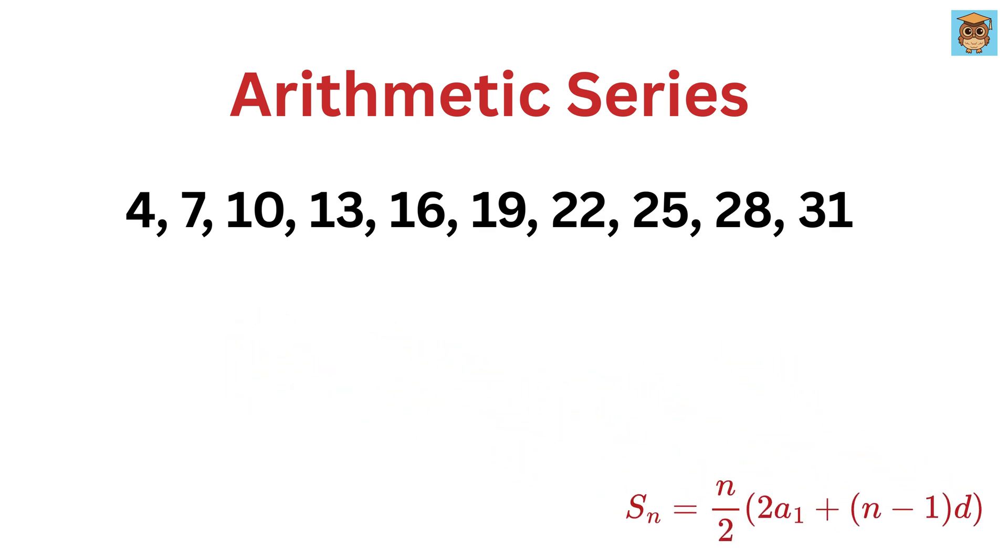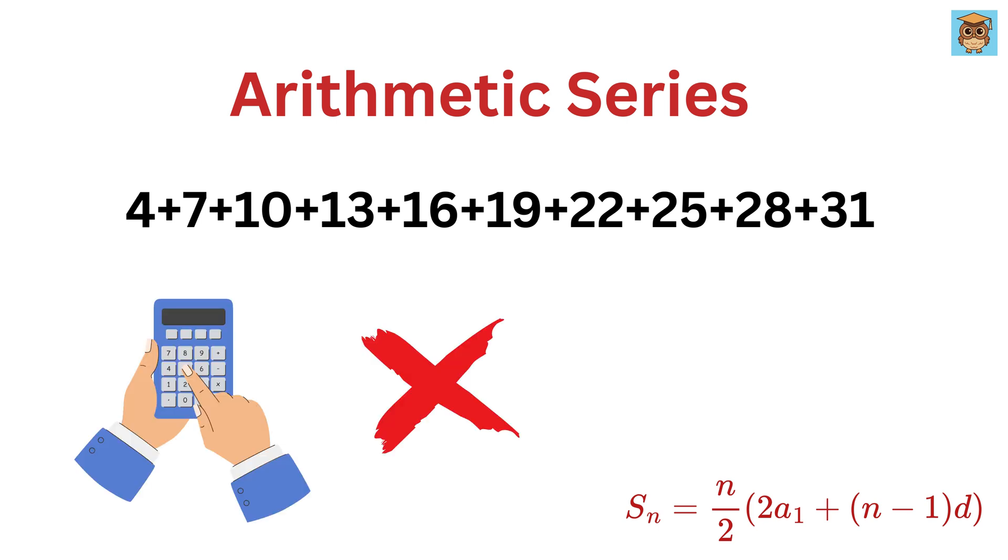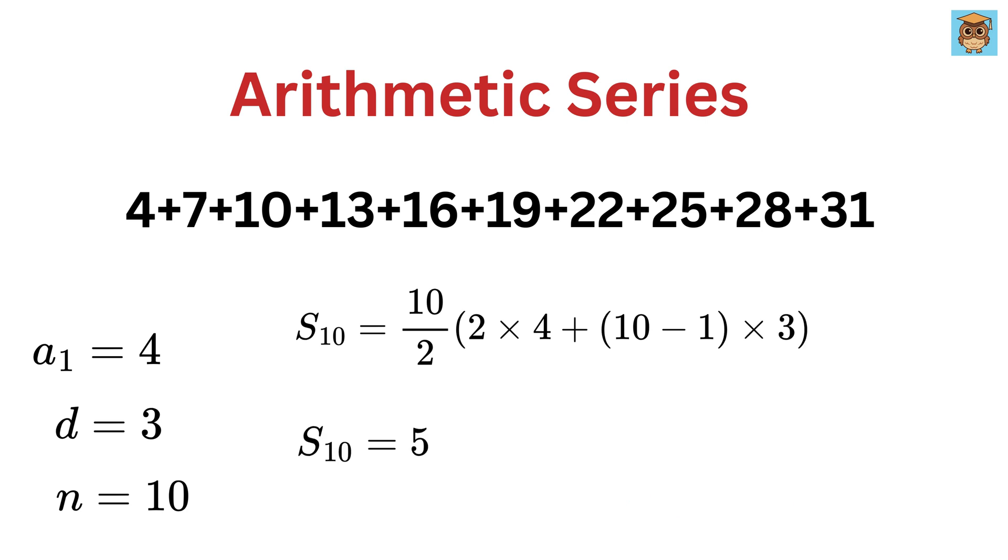So in our case, suppose we want to find the sum of these 10 terms. What will you do? Please do not put each number in calculator and click the plus button again and again. Instead, use this formula. Here, a1 is 4, d is 3, and n is 10. So the sum S equals 10 divided by 2 times 2 times 4 plus 10 minus 1 times 3. So that's 5 times 8 plus 27, which is 5 times 35. And the final answer is 175. So the sum of the first 10 terms is 175.